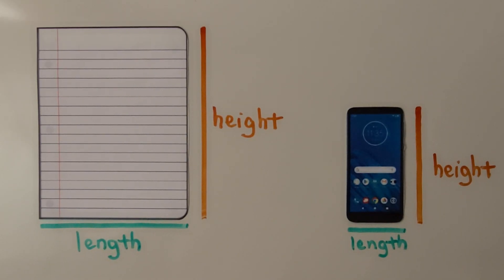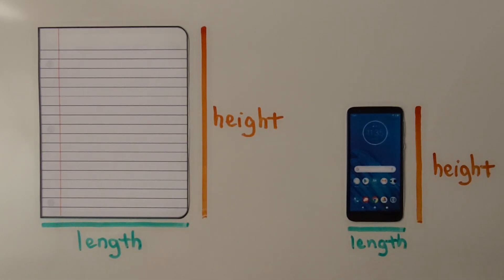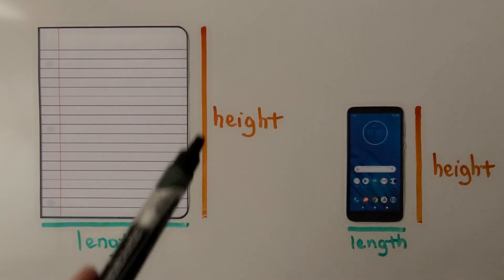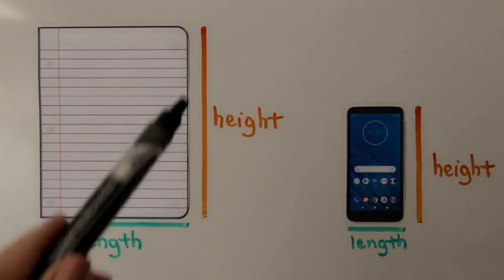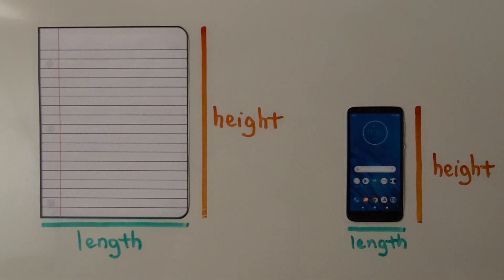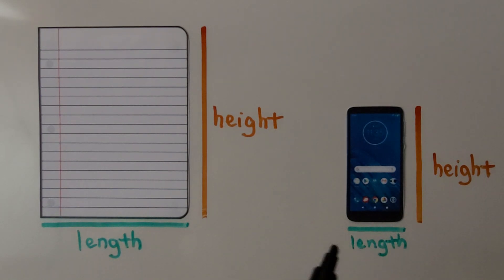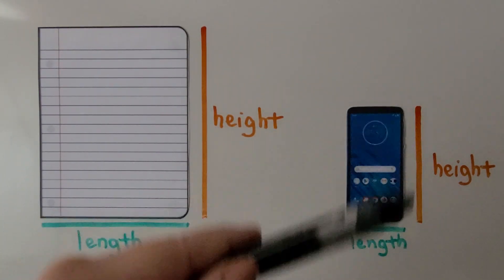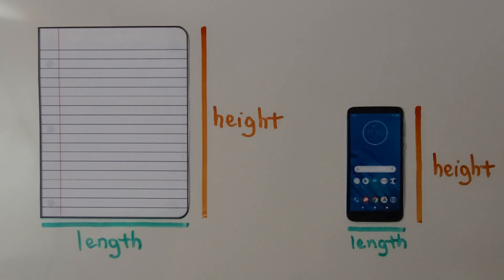We can measure objects by their length, height, and weight. The length from side to side, shown with the green horizontal line, tells us how long it is. The height from bottom to top, shown with the orange vertical line, tells us how tall it is. The paper is longer and taller than the phone, but the phone is heavier than the paper — the paper is lighter than the phone.